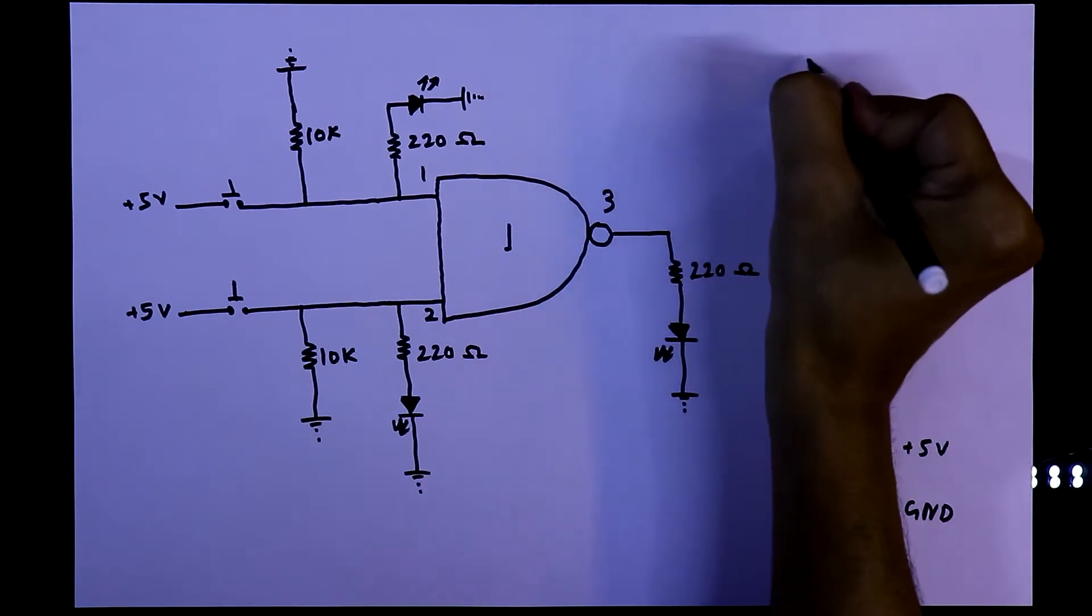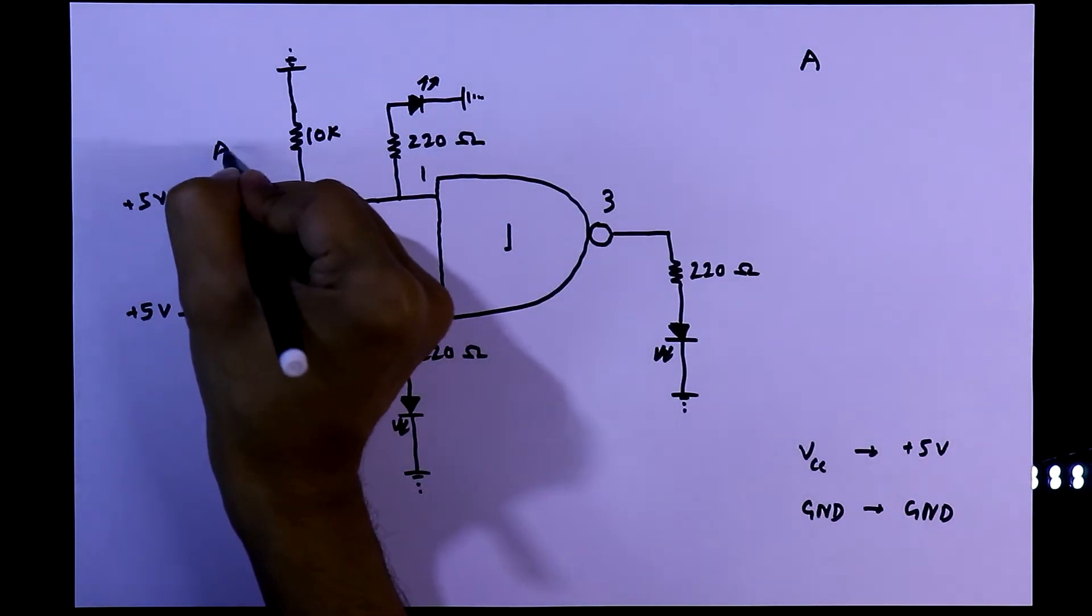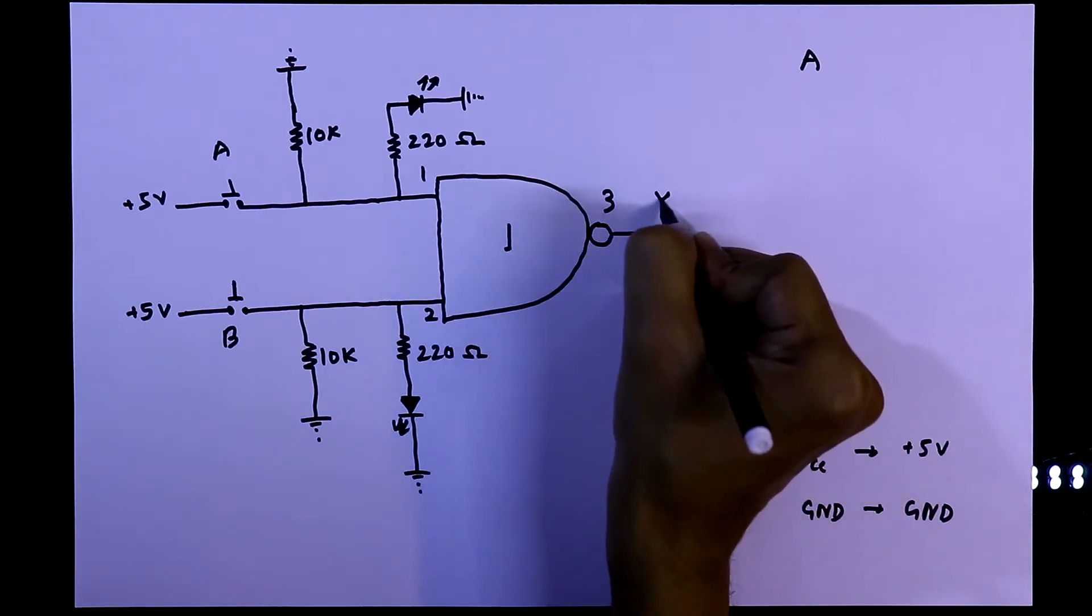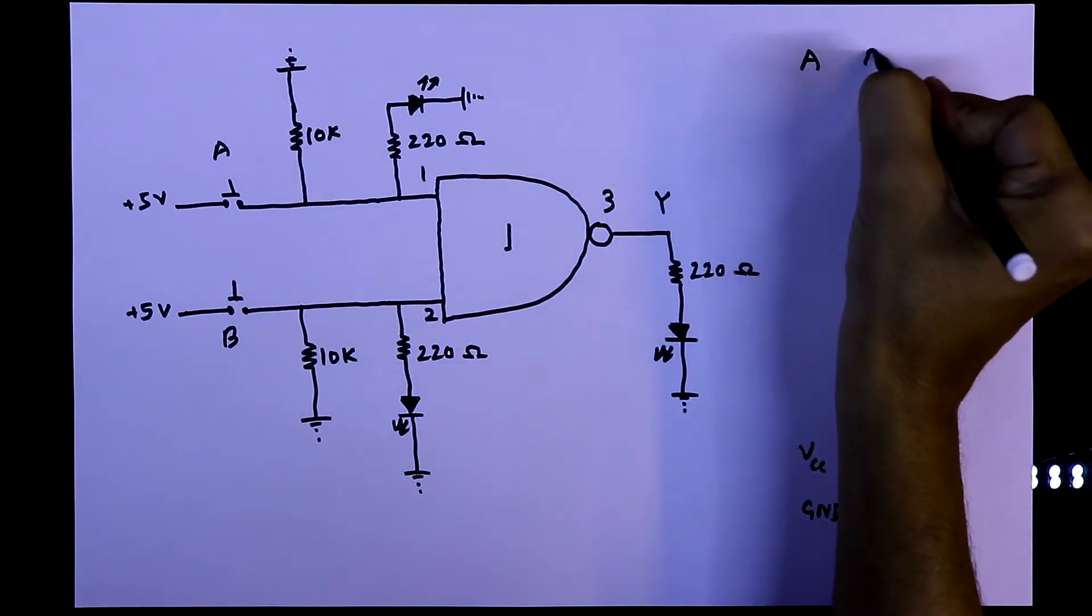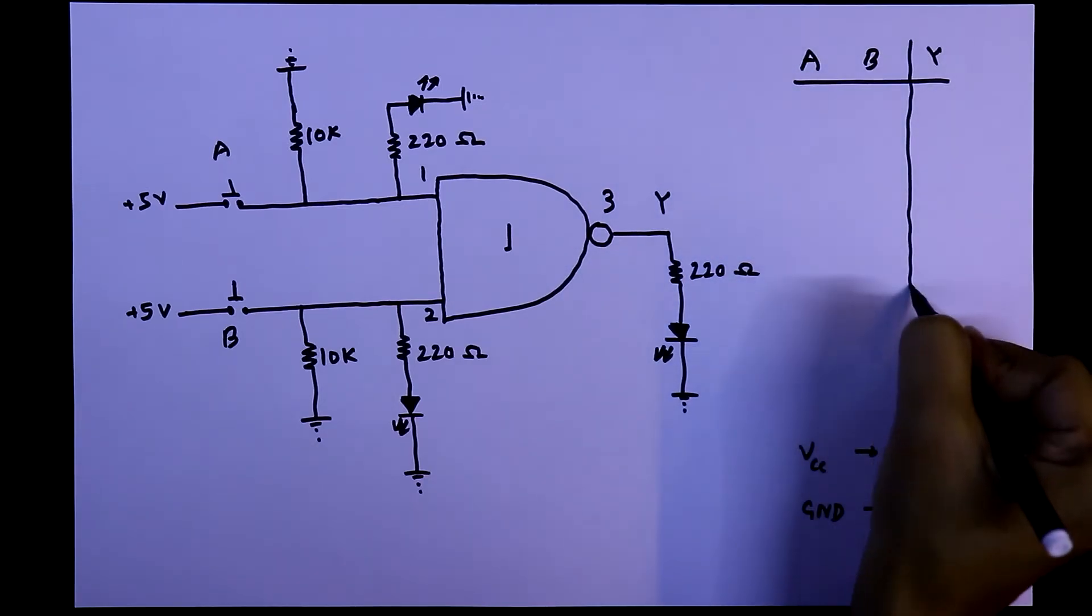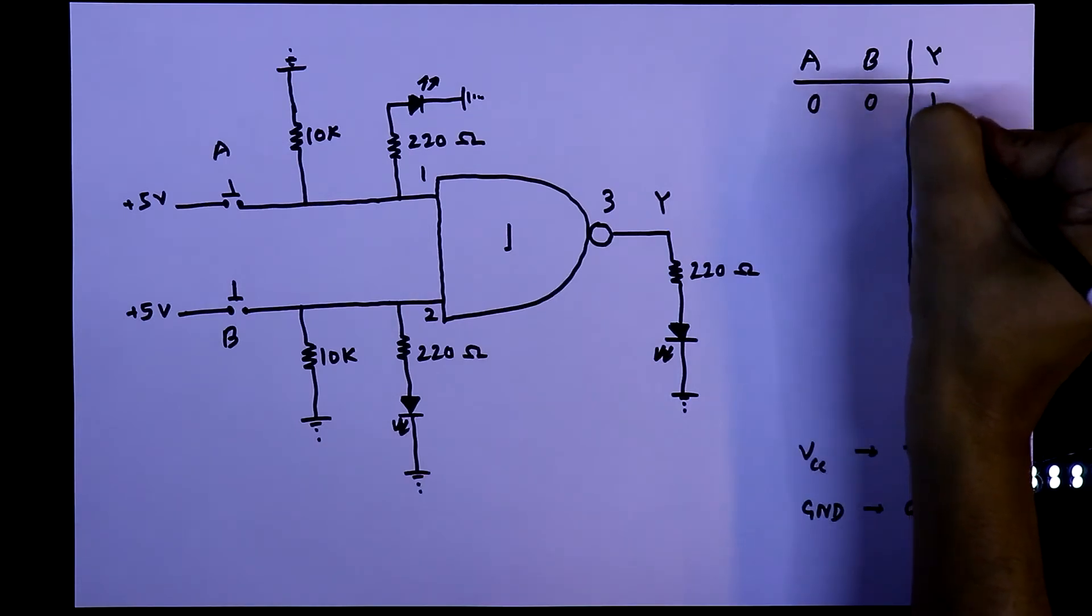And its truth table is here. This one is input A and input B, and Y is output. So input A and B, and here is Y. When both the inputs are 0, our output will be 1.